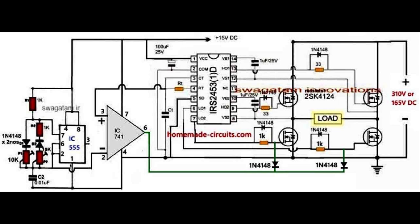The slow triangle waves are derived directly from the inverter's existing H-bridge oscillator IC across its timing capacitor CT. This CT timing capacitor is available in all inverter designs regardless of the topology. The slow triangle waveform across the CT pin of the inverter IC actually determines the output 50 Hz or 60 Hz frequency of the inverter. Therefore, by using this waveform as the slow triangle waves, we get two advantages: firstly, it helps to carve out the intended SPWMs.